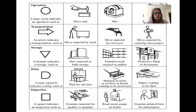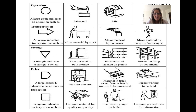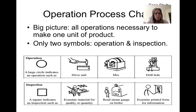Storage is the upside-down triangle, indicating things are waiting to be processed. Delay is another waiting symbol — not in a formal storage position, but in a place where the next operation is about to occur. Delay is often seen as a non-value-added activity, as is transportation. Inspection, indicated by a square, means you are adding value to the product by ensuring some kind of quality in processes or products. An operations process chart uses two of these symbols — operation and inspection — and it gives a big-picture view of all operations necessary to make one unit of production.